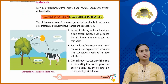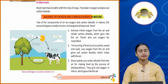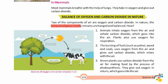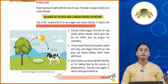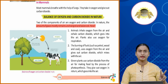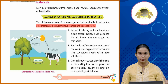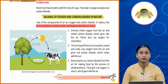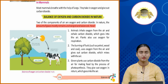Balance of oxygen and carbon dioxide in nature: two of the key components of air are oxygen and carbon dioxide. In nature, the amount of these gases mostly remains unchanged and balanced. The main two components — oxygen and carbon dioxide — remain mostly unchanged. Let us understand why.